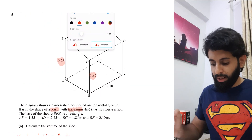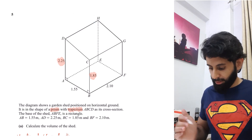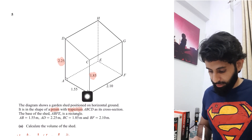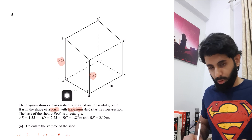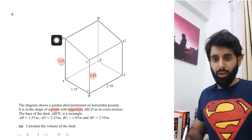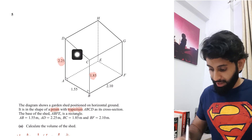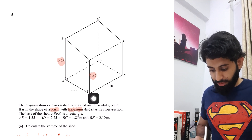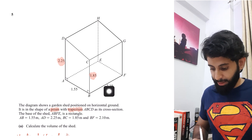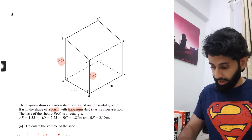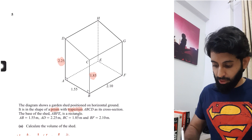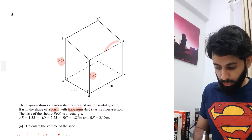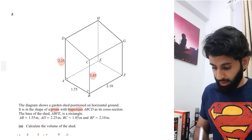Before working out the area of the roof, here's an important point: do not assume DC equals 1.55 just because AB = 1.55. ABCD is a trapezium, not a rectangle, so DC is not the same as AB. However, since BF = 2.10 and the base is a rectangle, CG also equals 2.10. So I know one dimension of the roof rectangle, which is 2.10.